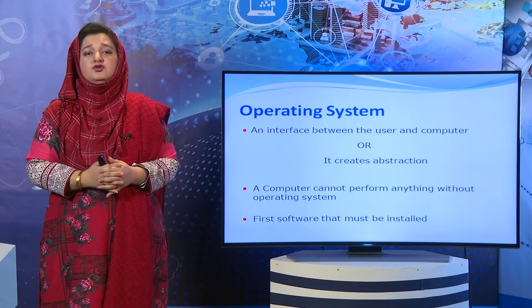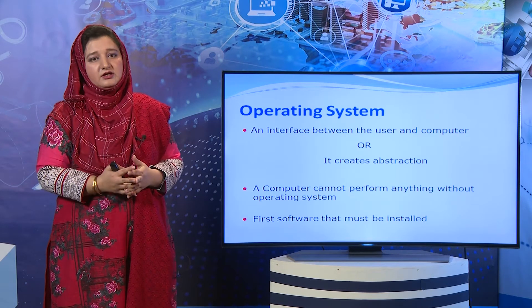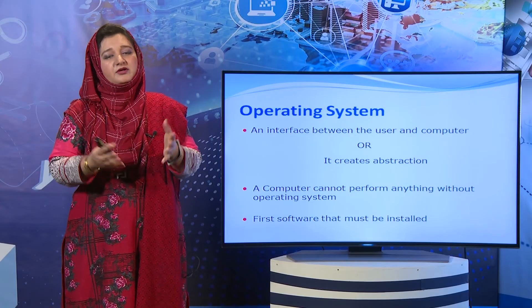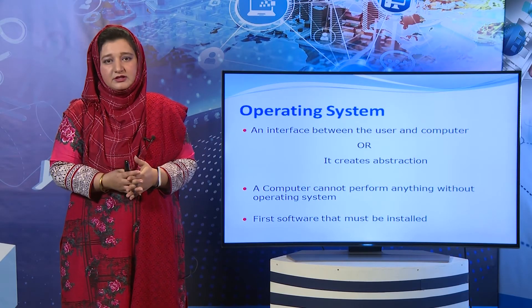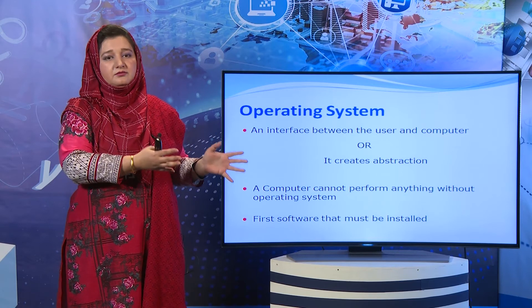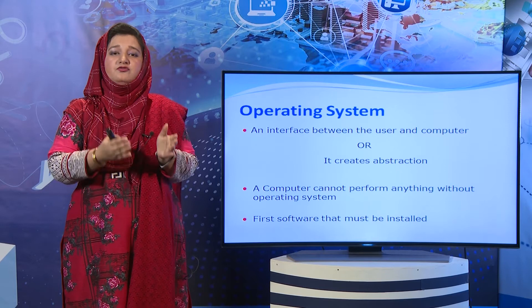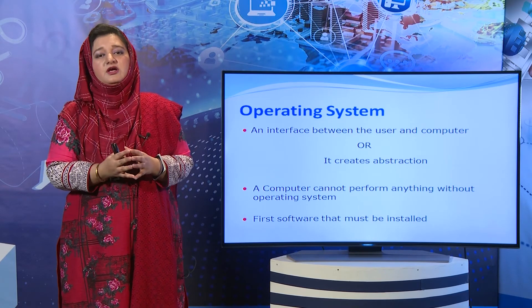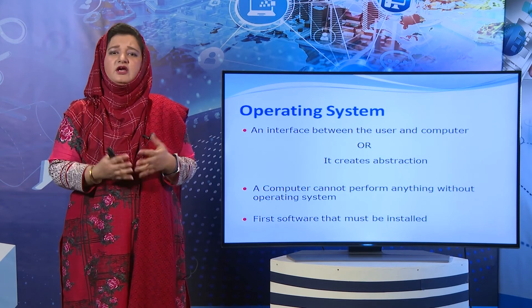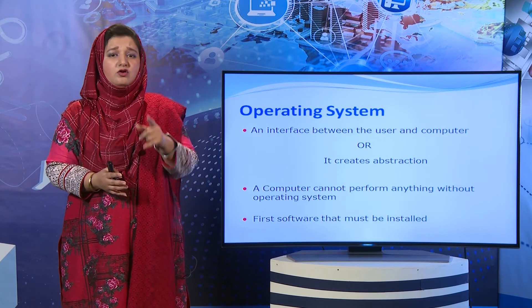Operating system is the first thing to be installed in the computer — اگر machine کو workable بنانا ہے تو سب سے پہلے operating system install کرنا ہے. There are a variety of operating systems in desktop computers. Apple کے laptops کا operating system different ہے، جبکہ دوسرے desktop computers میں آپ Windows install کر سکتے ہیں. Windows کے بھی بے شمار versions ہیں — Windows 7، Windows 8، Windows 10، Windows NT. There are many kinds of operating systems used according to the need of the hardware۔